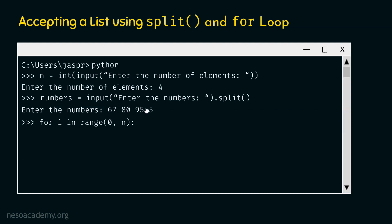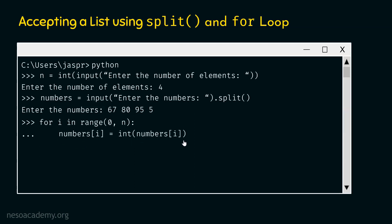It depends on the value of n — if the user entered 5 instead of 4, then the for loop must run 5 times to convert 5 different items to integers. Let's hit enter and add one statement inside this for loop. We first have to add the indentation, and then this statement: numbers[i] equal to int numbers[i]. This statement is required to convert each item of the list to an integer.